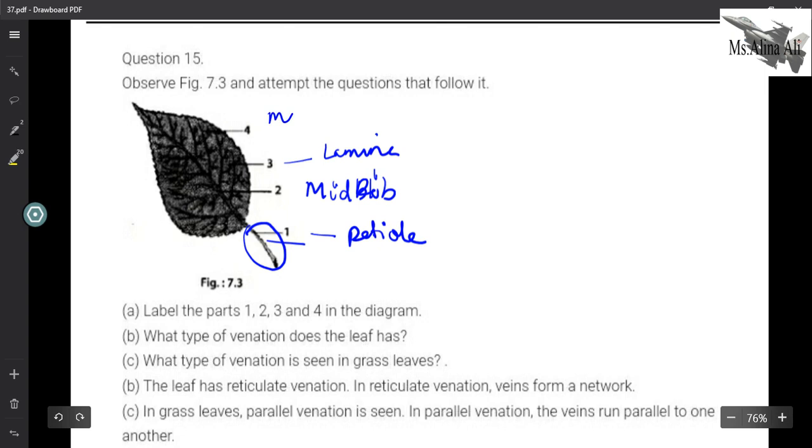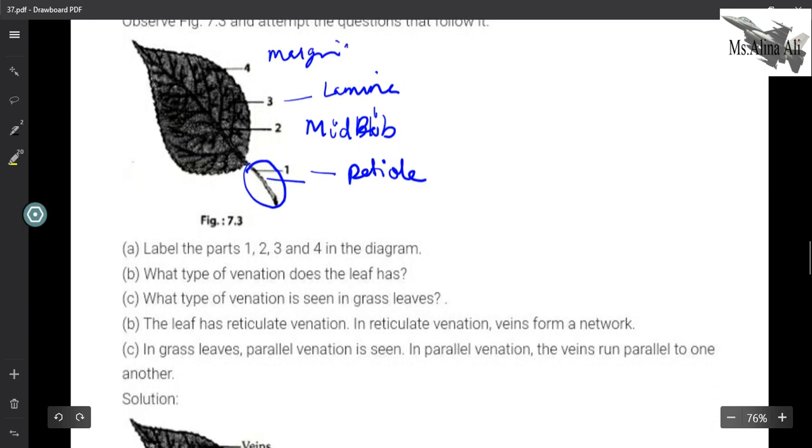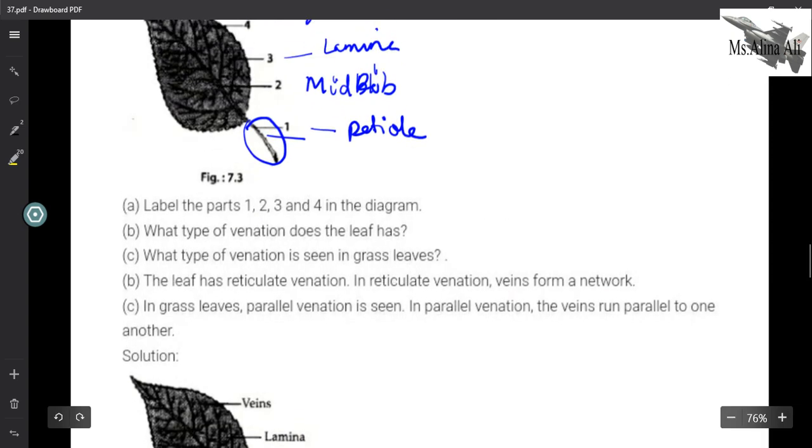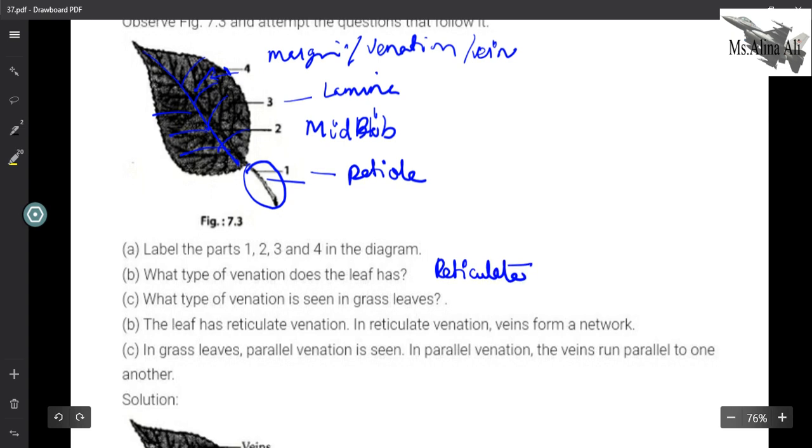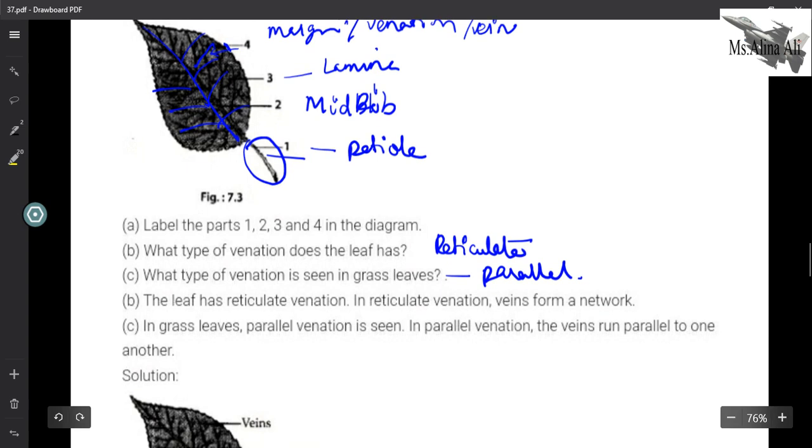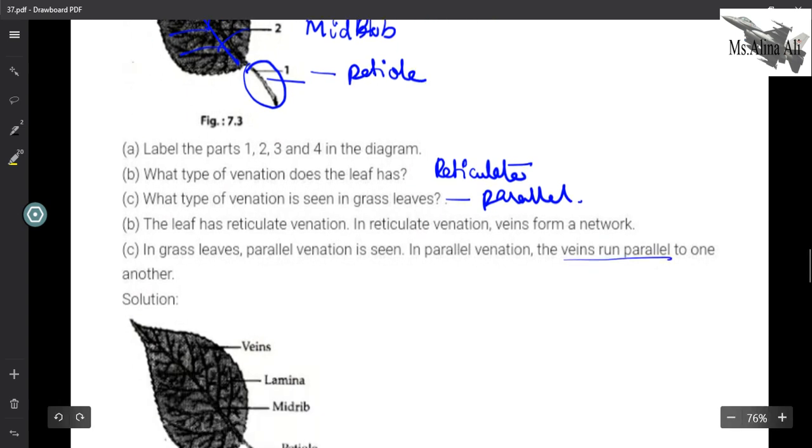And this will go as your margin or venation. So I forgot to write venation - both can be there. If it is marked here it is margin, if it is marked at the lines like these then it is vein or venation. Next, what type of venation does it have? This type of venation is reticulate venation. What type of venation is seen in grass leaves? We just saw above - grass has parallel venation. In reticulate venation veins form a network. In grass leaves parallel venation is seen where the veins run parallel to one another.